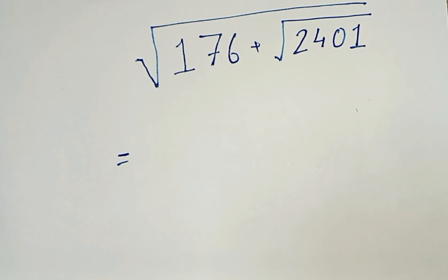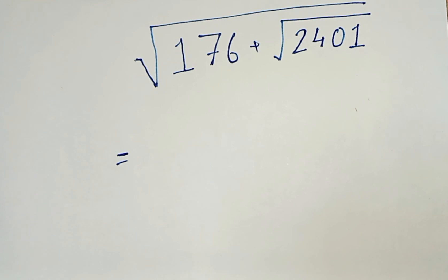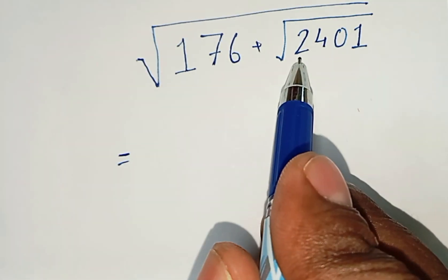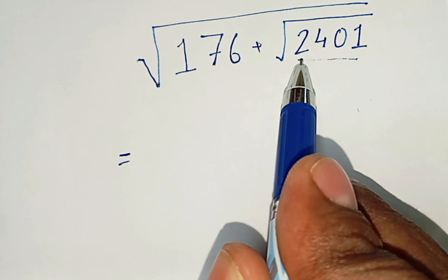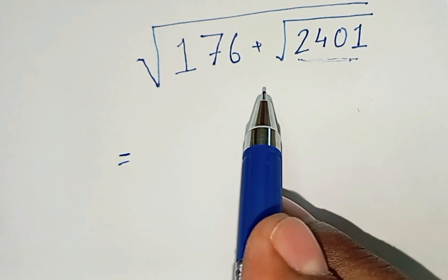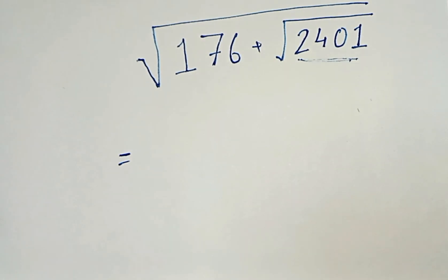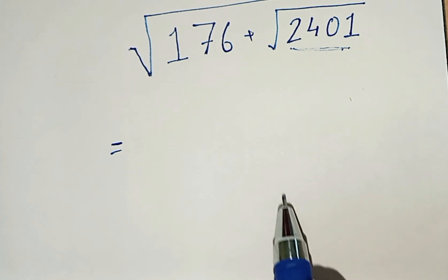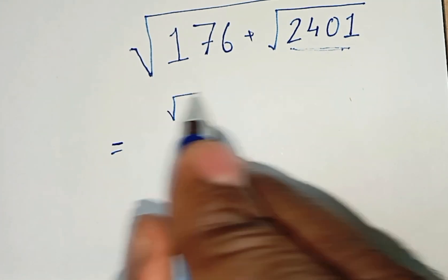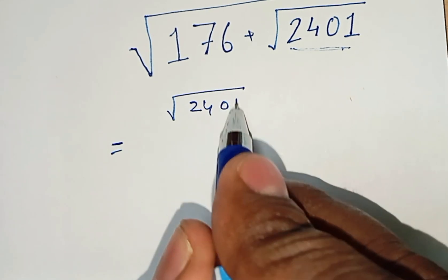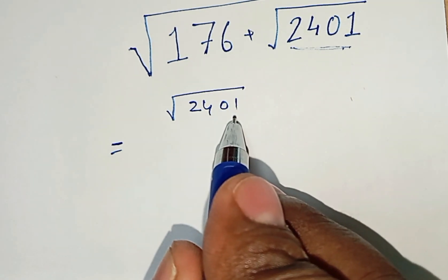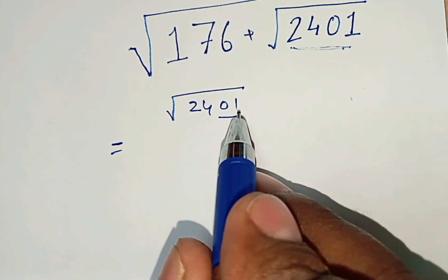The first topic of discussion is how you can find the value of √176 + √2401. First, you have to find the value of √2401. Look at root of 2401 — the last digit is 1, so you have to find a 2-digit answer ending in 1.